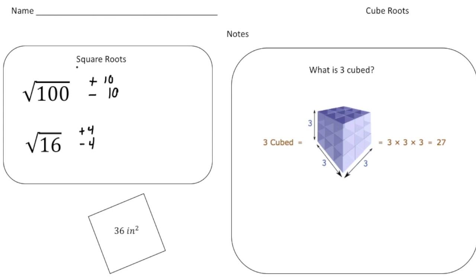When we're talking about square roots, we're talking about numbers that are multiplied together, that are identical, to get the original number, which is 100 in this case, and then 16 in this case. For the square root of 36, we know that the length and width are both going to be 6 and 6.